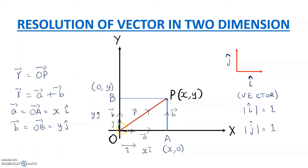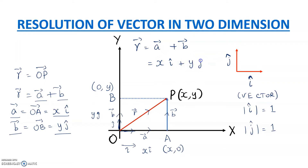So what is our vector R? Vector R is vector A plus vector B. We have shown vector A to be x·i-cap and vector B to be y·j-cap, so vector R can be written as x·i-cap plus y·j-cap. Remember, the cap on i-cap and j-cap indicates it is a unit vector — i-cap is along the x-axis and j-cap is along the y-axis, each with magnitude 1.